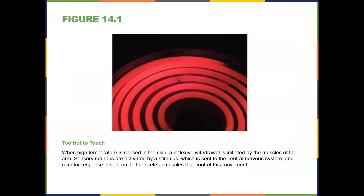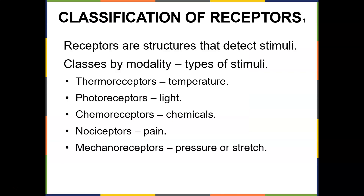We have to talk about receptors in our body. For example, if something is too hot to touch, when high temperature is sensed in the skin, a reflexive withdrawal is initiated by the muscles of the arm. Sensory neurons — afferent — are stimulated by a stimulus sent to the central nervous system, and then a motor response via efferent nerves is sent to the musculoskeletal muscles. Receptors are structures that detect stimuli, and they are classified by their modality.